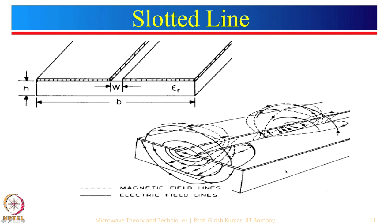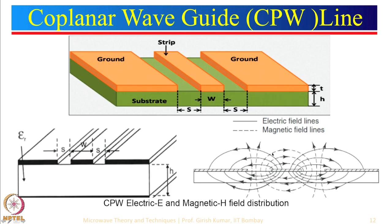Then we also looked at some other variations like slot line and coplanar waveguide. These lines are relatively more lossy in the sense that there will be more radiation losses, so many times they are better options as antennas than as microstrip circuits. That is why in this course we will focus more on the microstrip circuit.